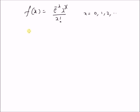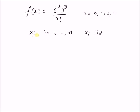Our goal is to find the maximum likelihood estimator of the parameter lambda from the observations x_i, where i is equal to 1 to n. That is, we want to find an estimate of lambda from n observations, and moreover x_i are iid — independent and identically distributed values. That is, each x_i is a realization of a random variable that has a Poisson distribution.